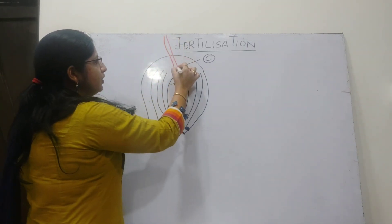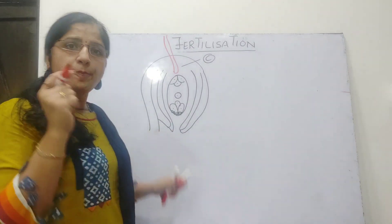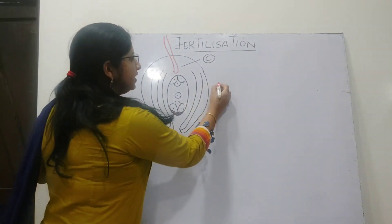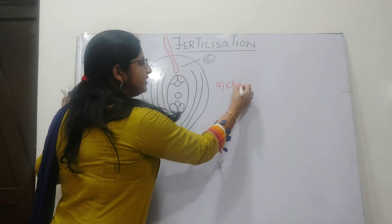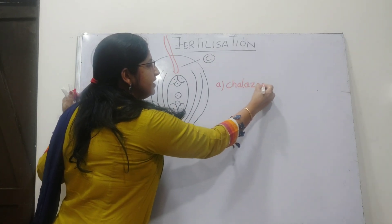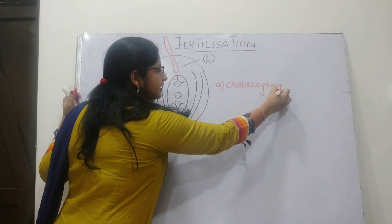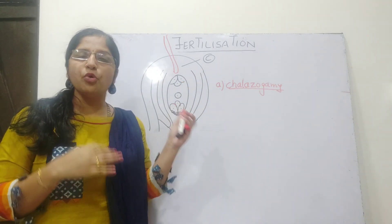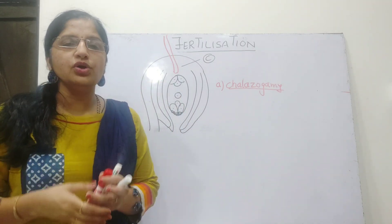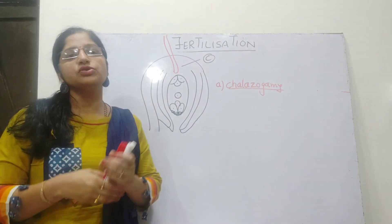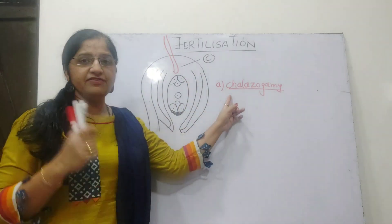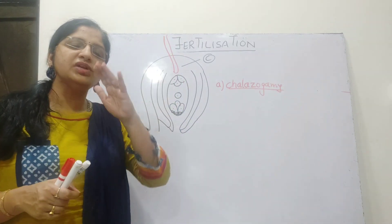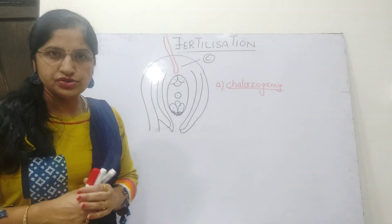There are three types of pollen tube entry. If the pollen tube directly passes through the chalaza and approaches the embryo sac, then this method is called chalazogamy. This process is called chalazogamy, which is not a very common way for the pollen tube to pierce into the ovary to approach the embryo sac. It is called chalazogamy if the pollen tube pierces through the chalaza to approach the embryo sac.